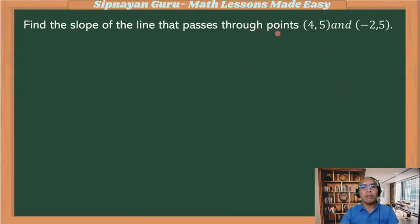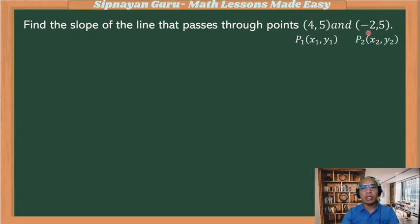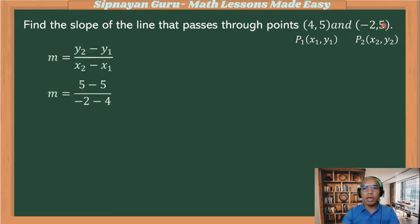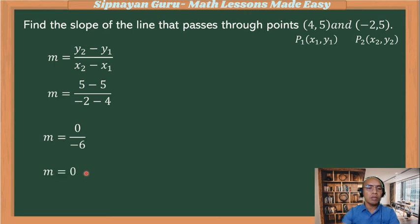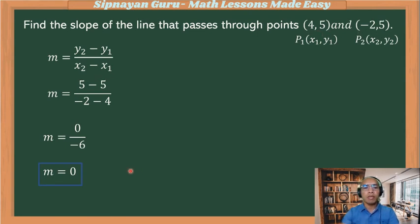Find the slope of the line that passes through (4, 5) and (−2, 5). Point one: x₁ = 4, y₁ = 5. Point two: x₂ = −2, y₂ = 5. Substituting into the formula: (5 − 5) over (−2 − 4) = 0 over −6 = 0. Therefore the slope of the line passing through (4, 5) and (−2, 5) is zero.